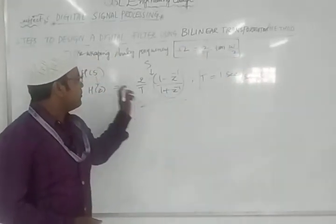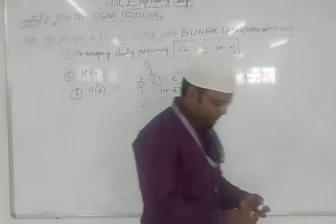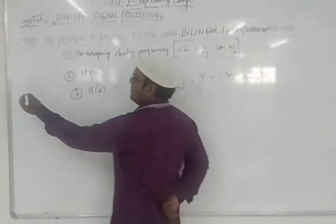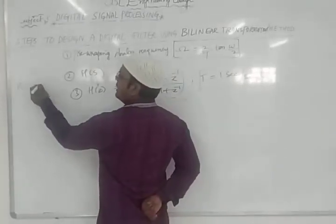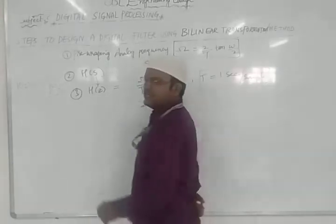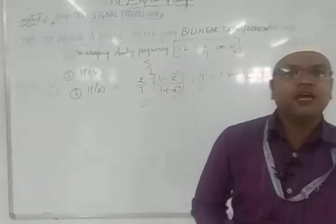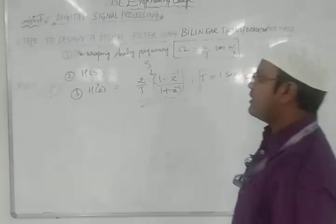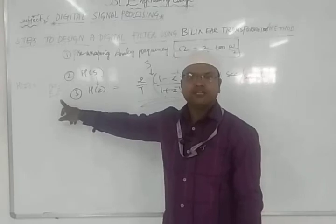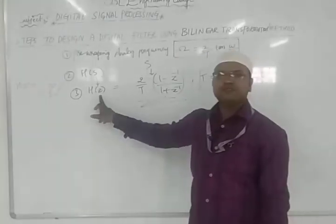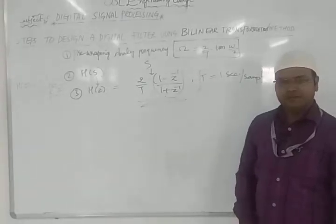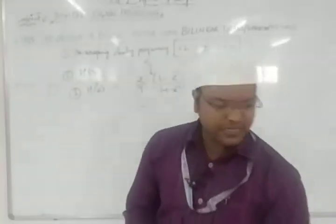For bilinear transformation we use that substitution factor. In contrast, for the impulse invariant response method, H(z) is obtained as 1/(1 − e^(pₖT) z⁻¹), where e^(pₖT) corresponds to the poles. We just take the poles and convert from the s-plane to z-plane using the impulse invariance method. Now let us take one problem and try to solve it.